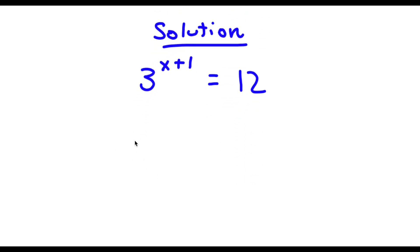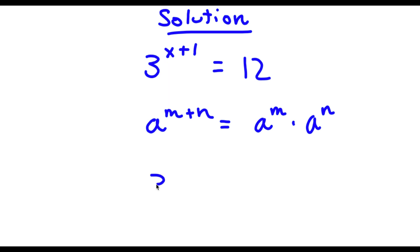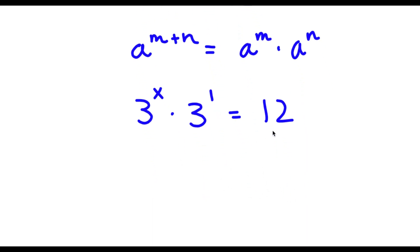Now, if I have something in the form a to the power of (m + n), this is equal to a^m times a^n. So in this case, 3^(x+1) can be written as 3^x times 3^1, and this is equal to 12.